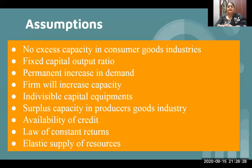Then surplus capacity in the producer's goods industry — we assume that producer goods industries have surplus capacity so we can use inputs as needed. Availability of credit: if we are an investor and want to invest, credit will be easily available from the market without any hurdles. This is another assumption we make.